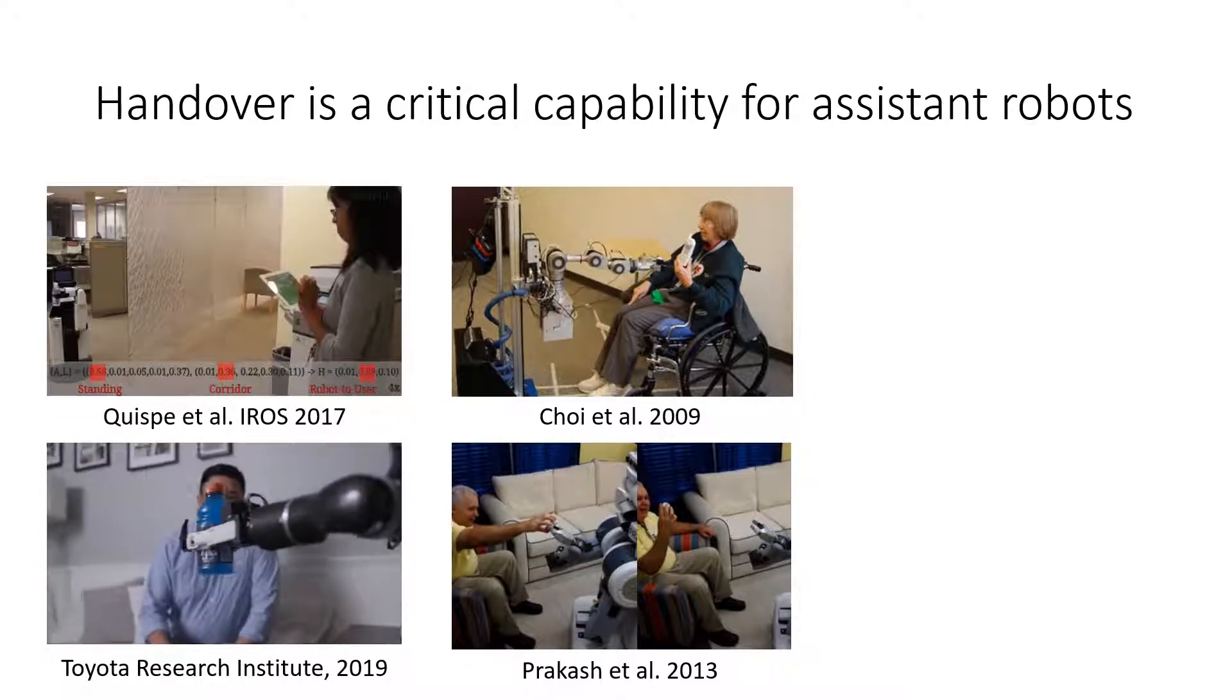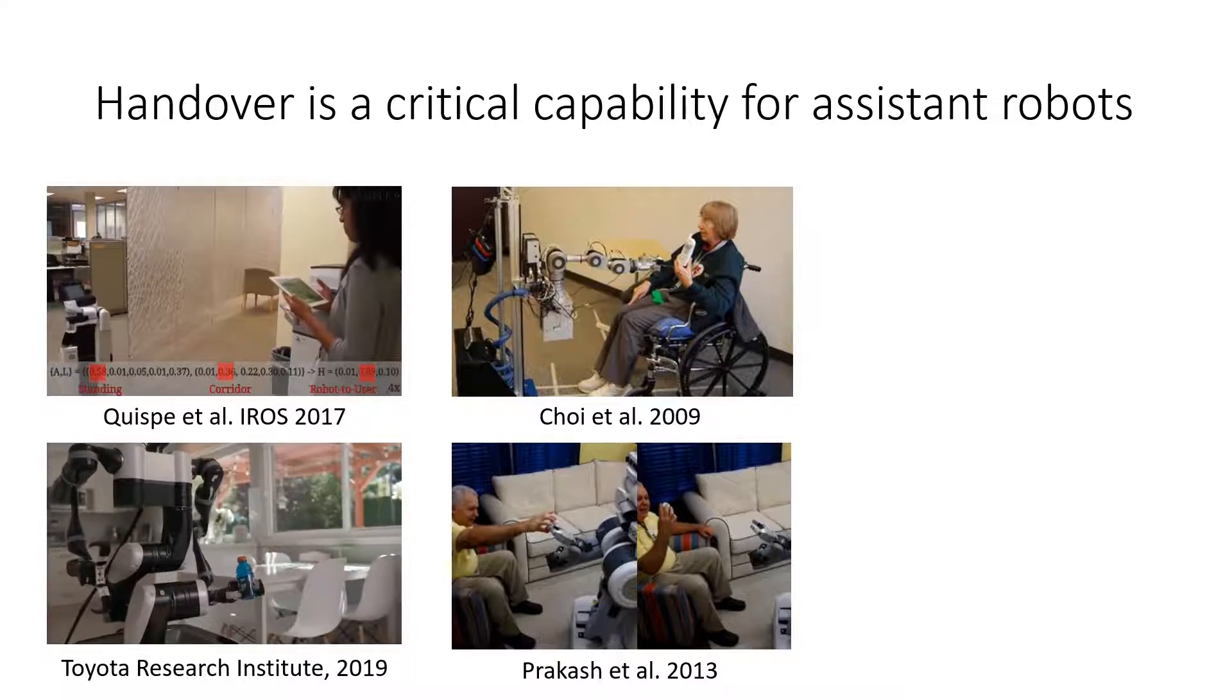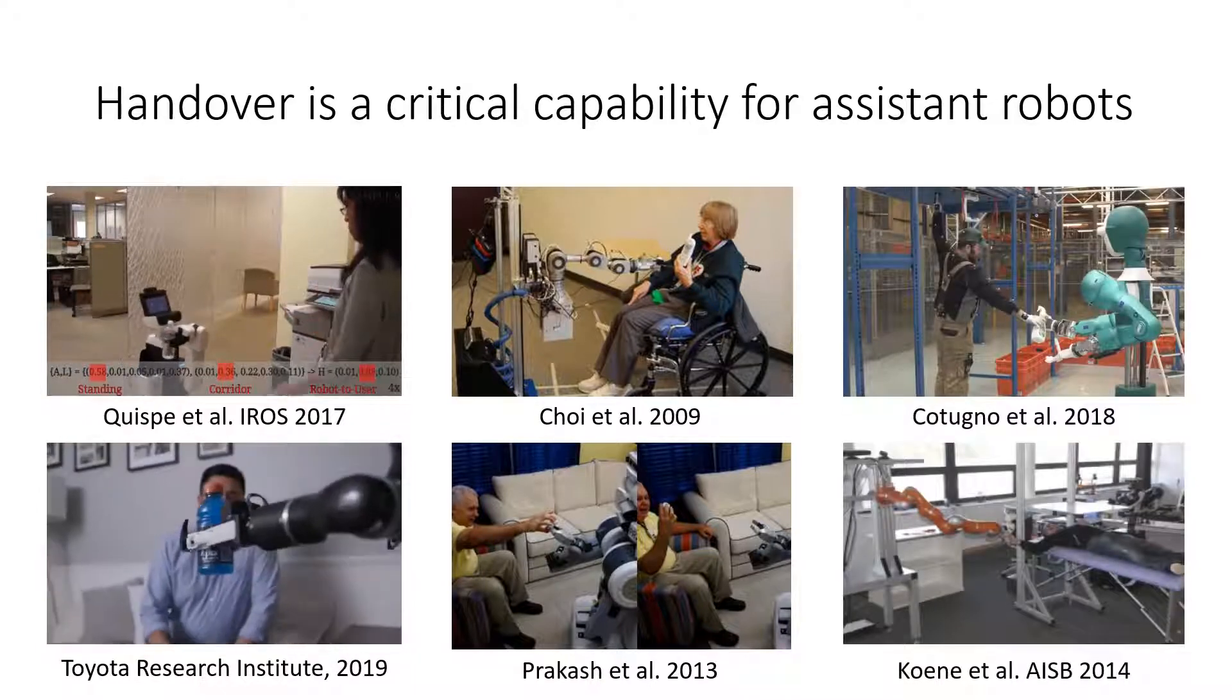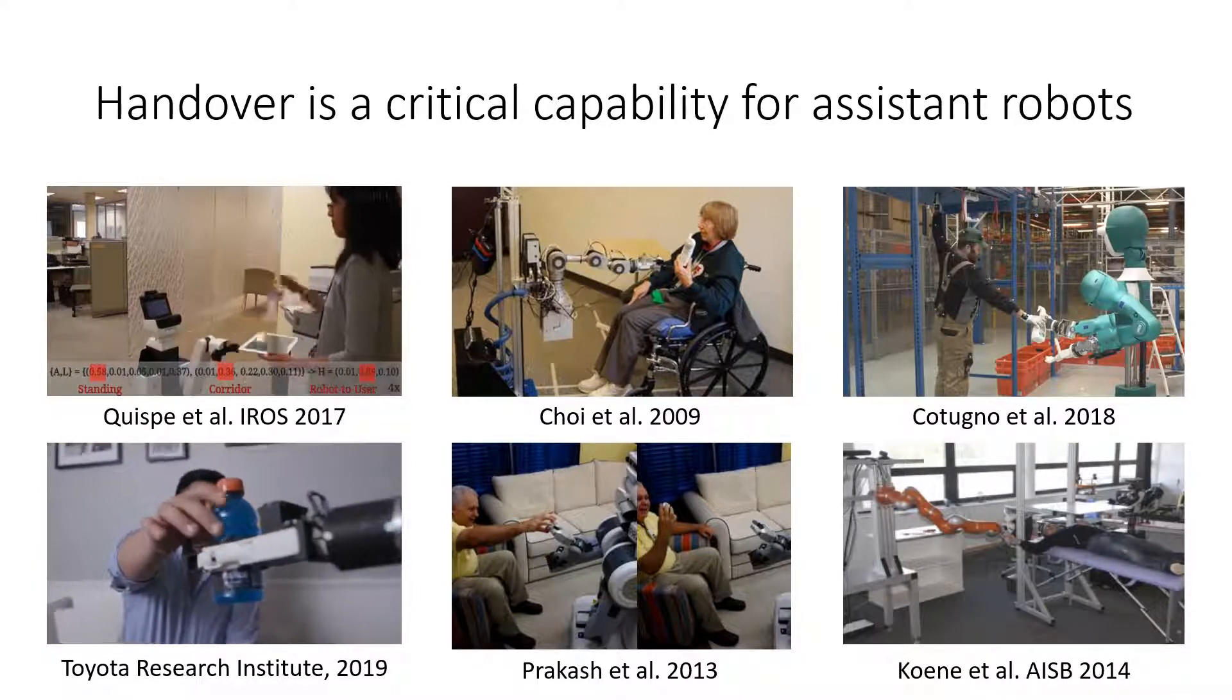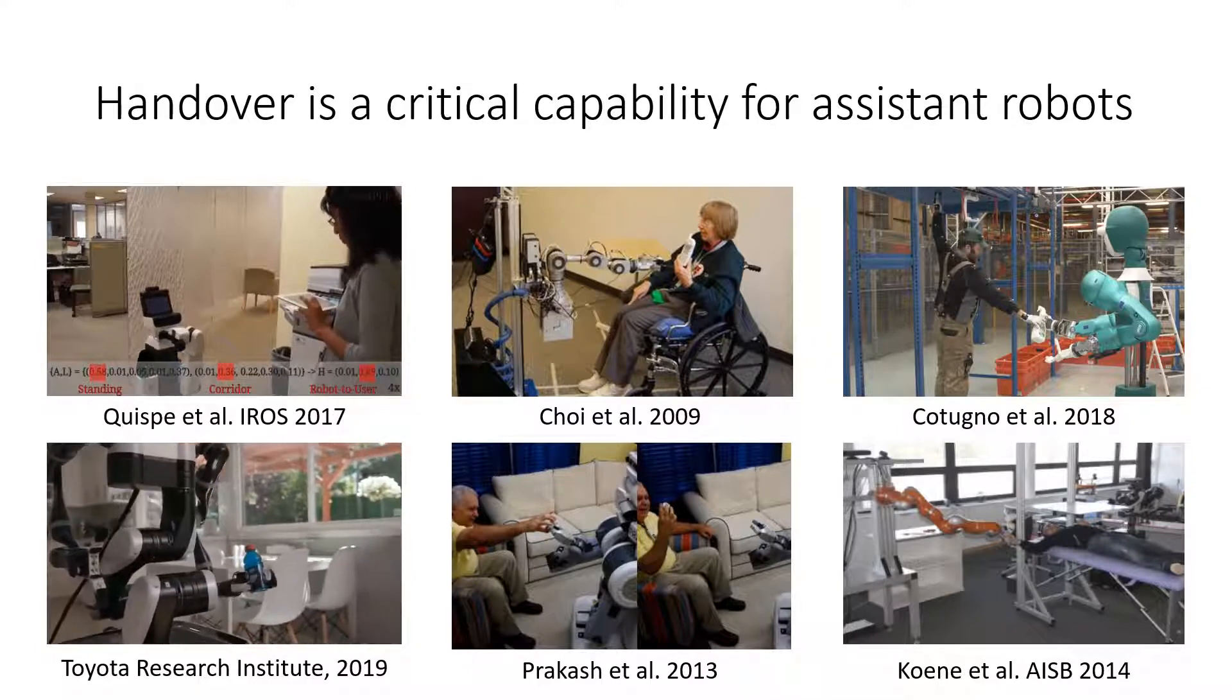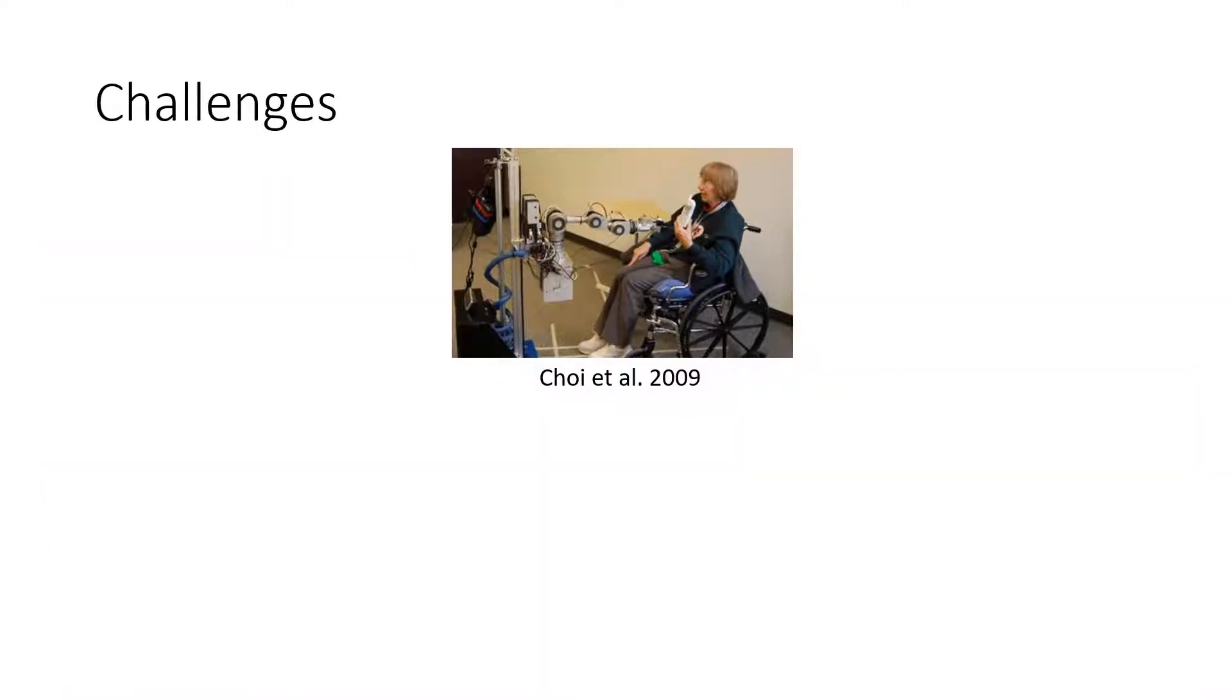Such as a cell phone or a medication bottle. In factories, robots can increase efficiency by handing off parts and tools to workers. One of the key challenges is the diversity of objects that robots need to handle, especially in unstructured, personalized environments like homes.